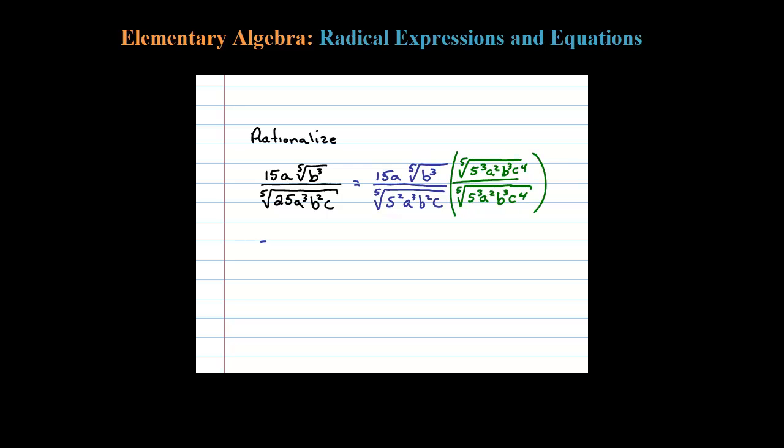Let's see what we get in the numerator. I'm left with 15a times the fifth root. Well, five to the third is 125 a squared, and then I have b to the third times b to the third is b to the sixth, and then C to the fourth, all over...